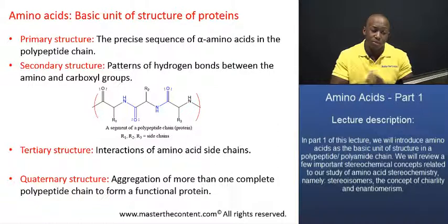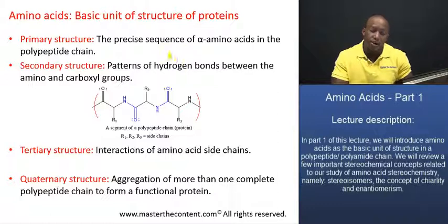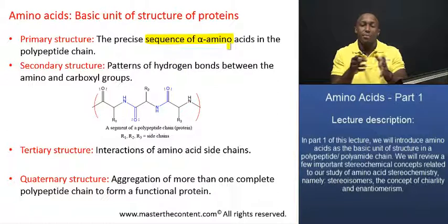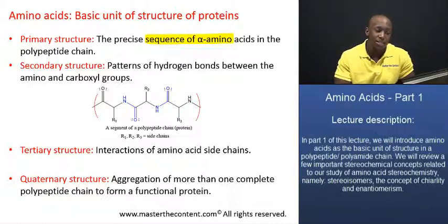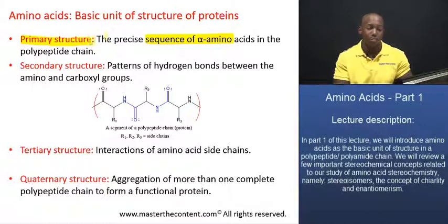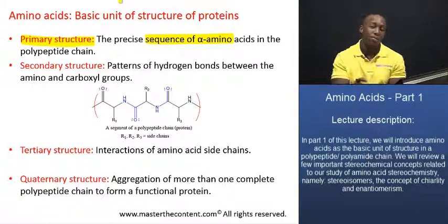The precise sequence — that exact sequence of amino acids in that polypeptide chain — is what we refer to as the primary level of structure. That is the primary level of structure in a protein. It refers to the exact sequence of amino acids in the polypeptide chain.